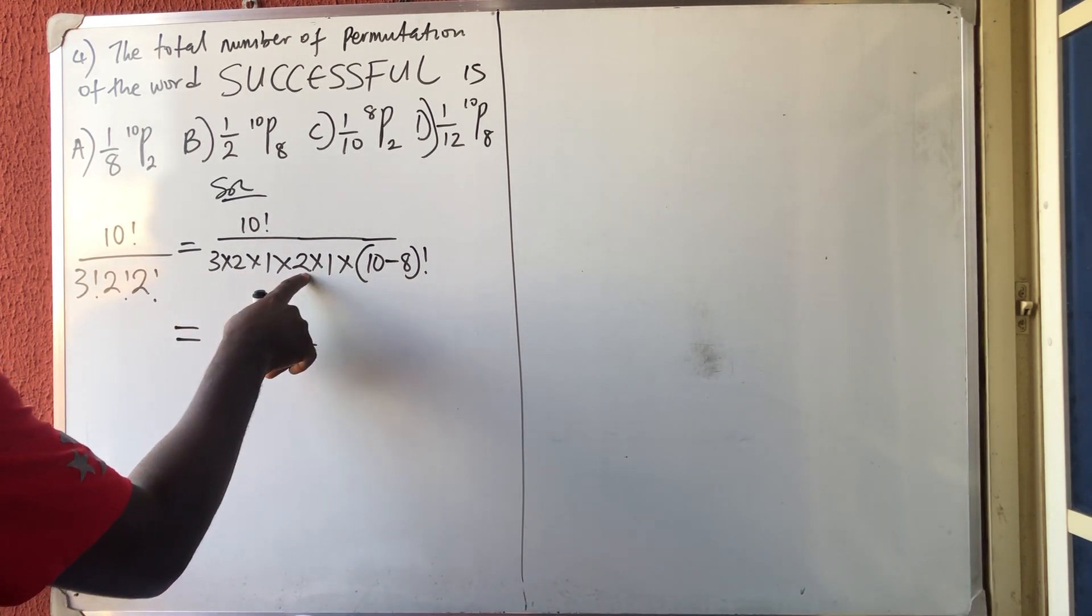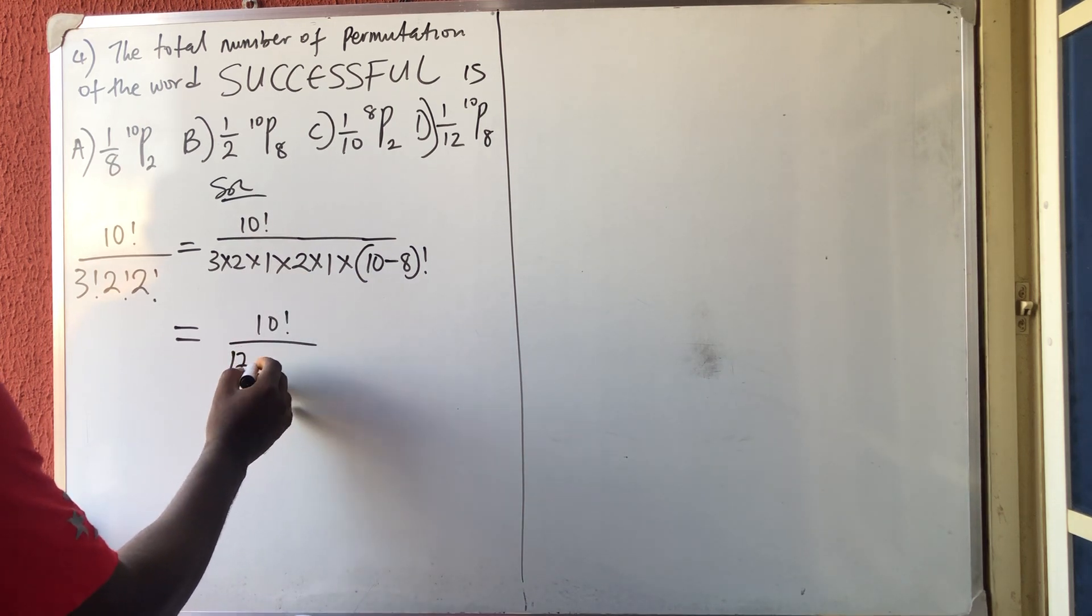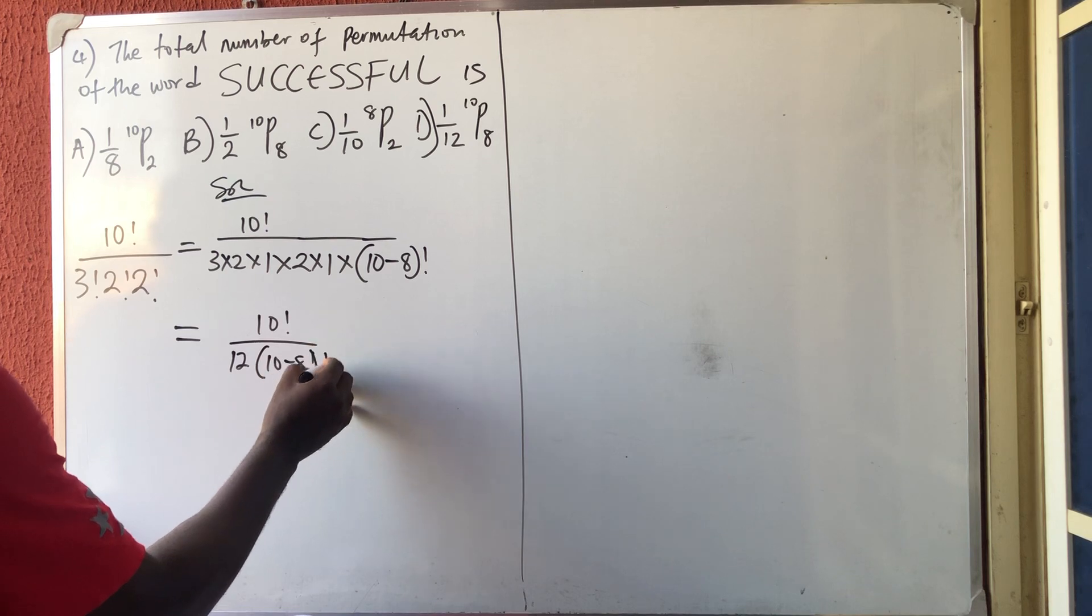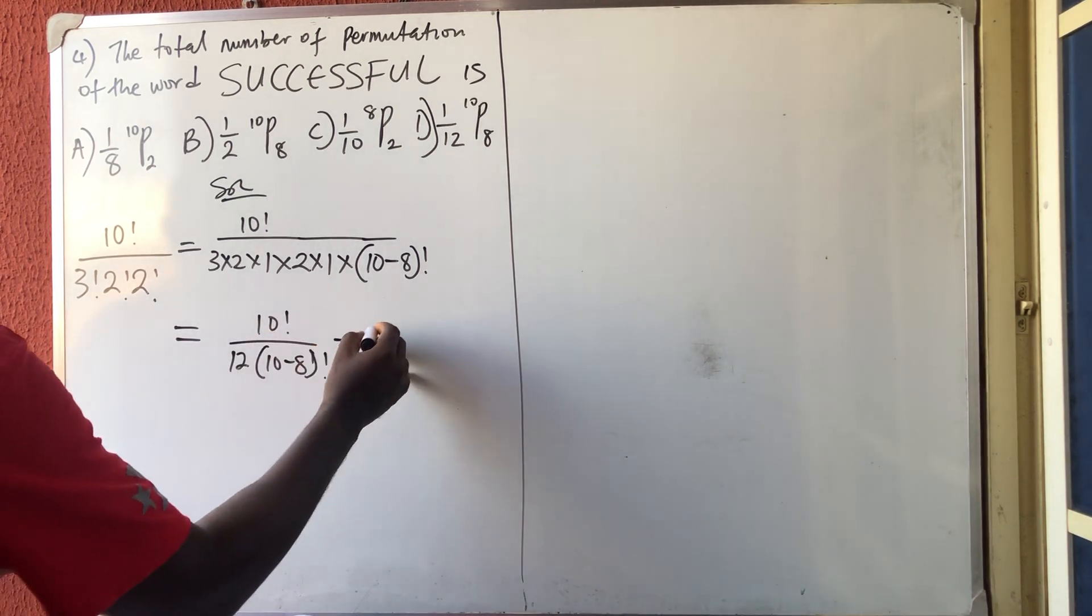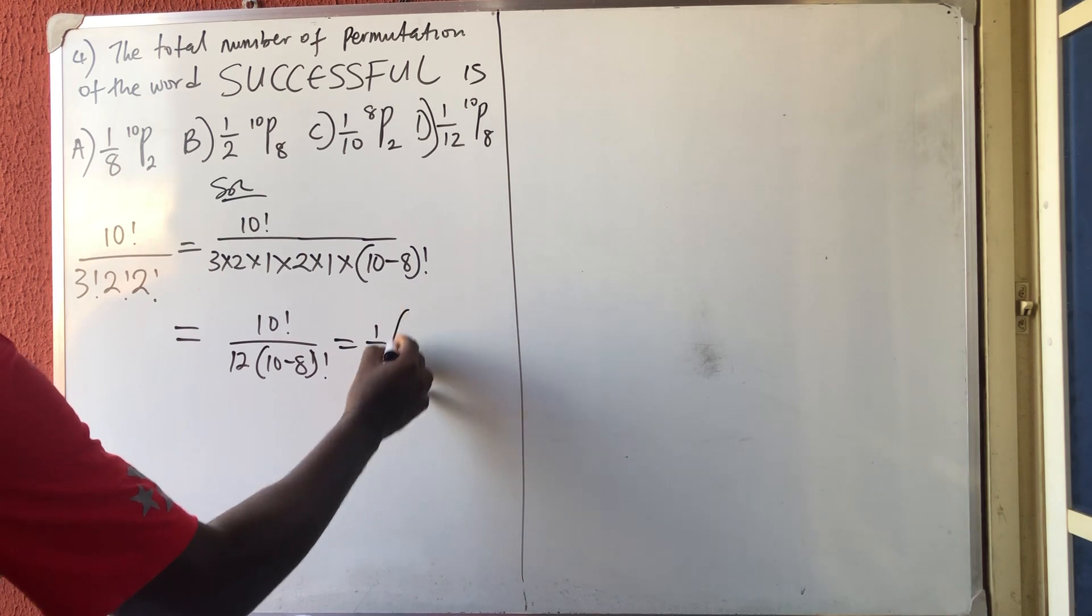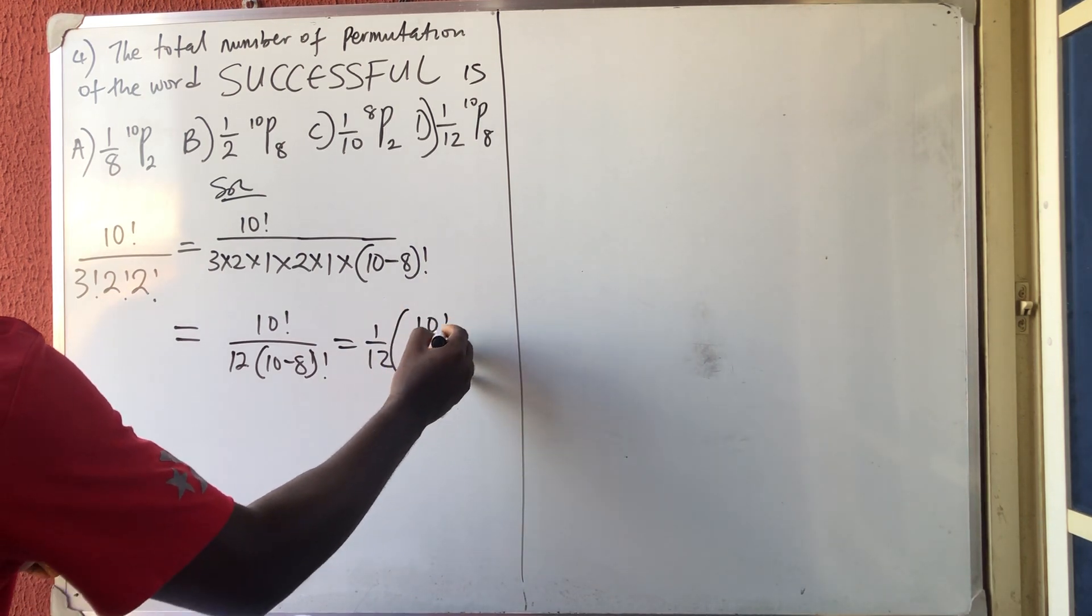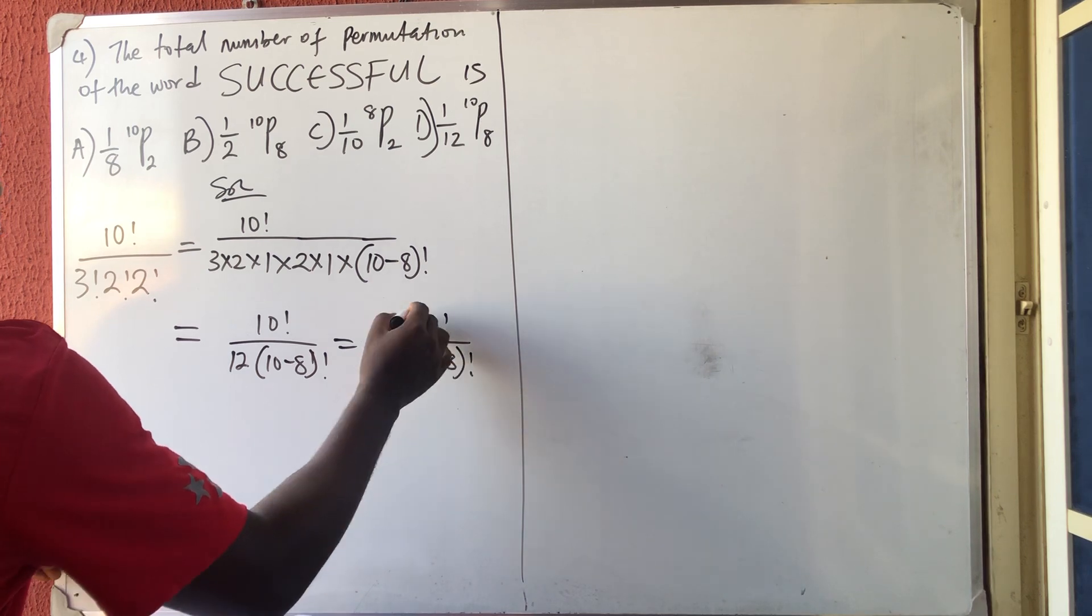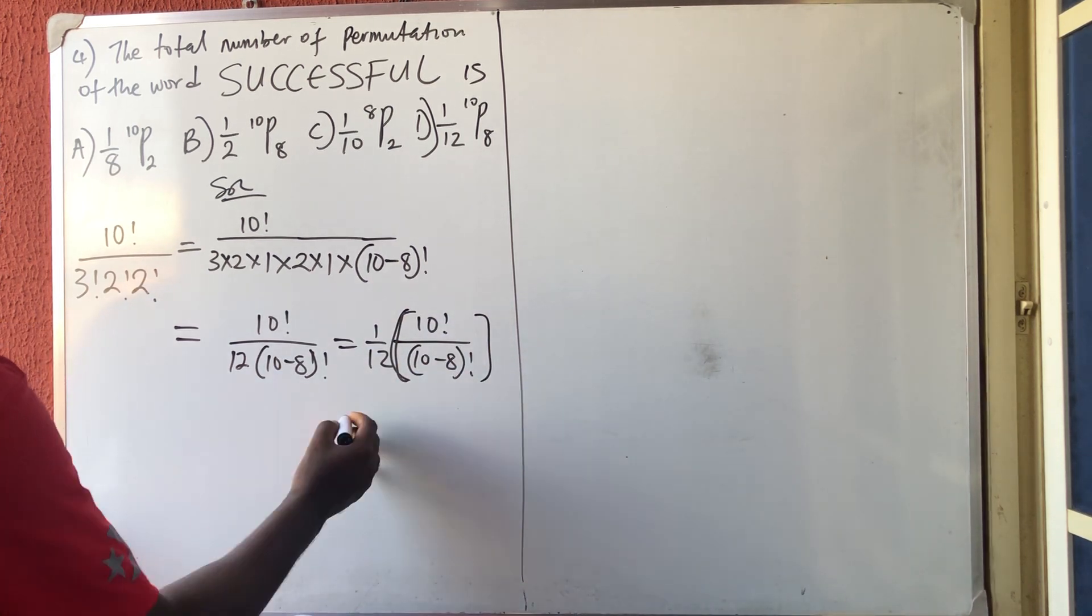So my answer is now what? 10 factorial all over 2 times 3, 3 times 2 is 6, 6 times 2 is 12. So I'm going to have 12 in brackets of what? 10 minus 8 factorial. Okay, do you believe that this is 1 over 12, 1 over 12, then I'm having 10 factorial all over 10 minus 8 factorial.